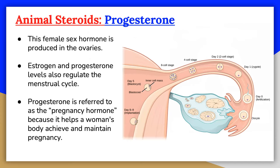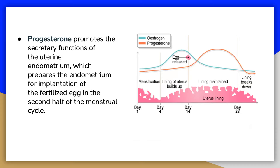Progesterone belongs to a group of steroid hormones called progestogens. It is mainly secreted by the ovary during the second half of the menstrual cycle and plays an important role in the menstrual cycle and in maintaining the early stages of pregnancy. The progesterone prepares the body for pregnancy in the event that the released egg is fertilized. If the egg is fertilized, progesterone stimulates the growth of blood vessels that supply the lining of the uterus and stimulates glands in the endometrium to secrete nutrients that nourish the early embryo.